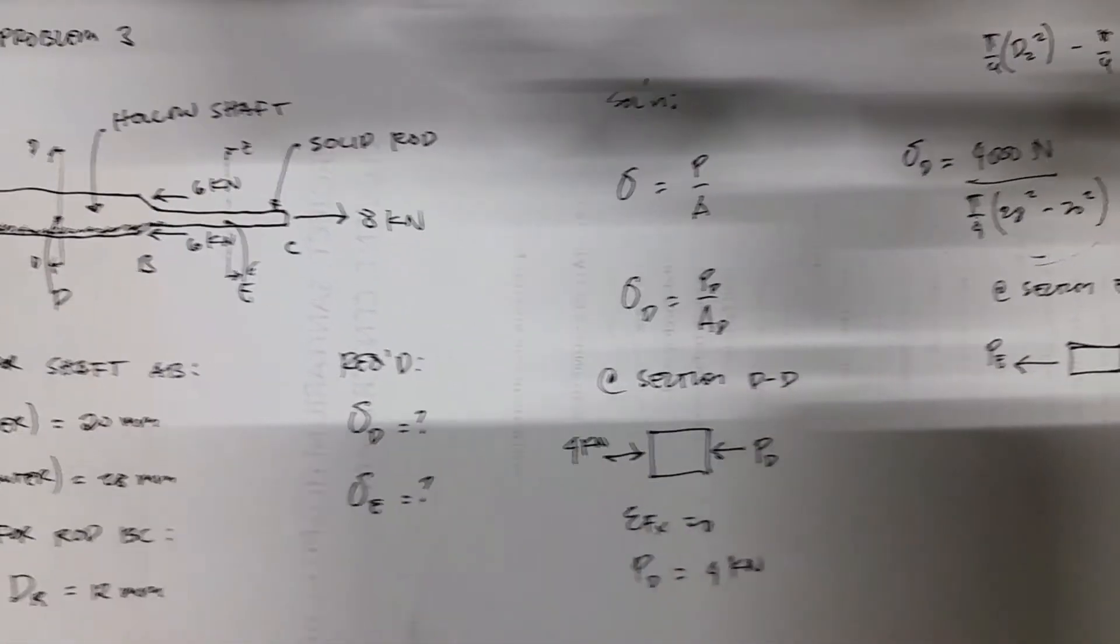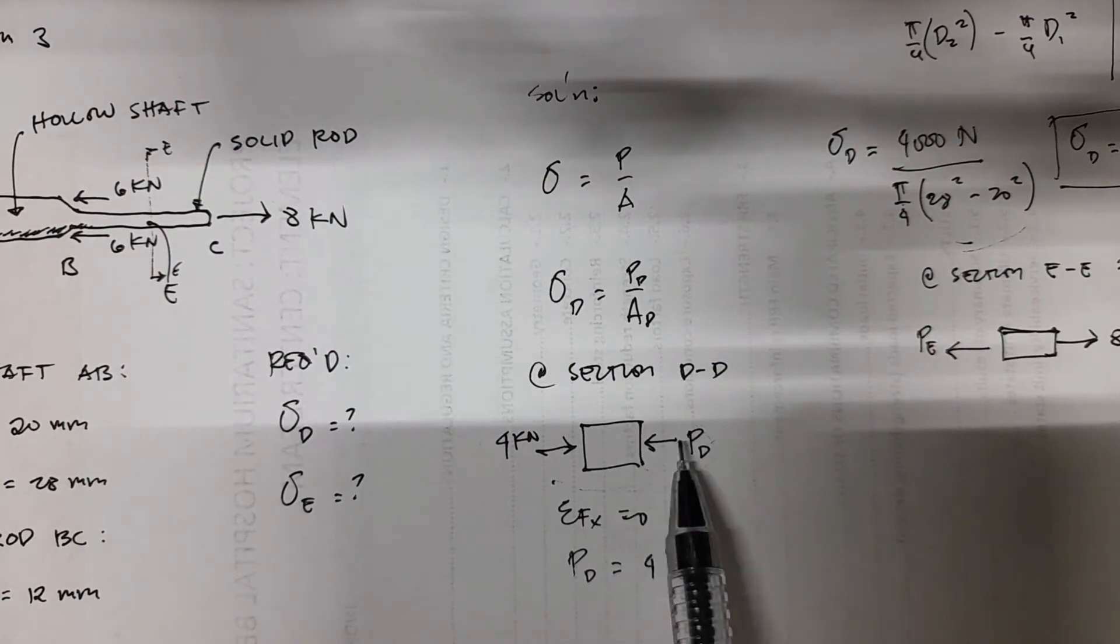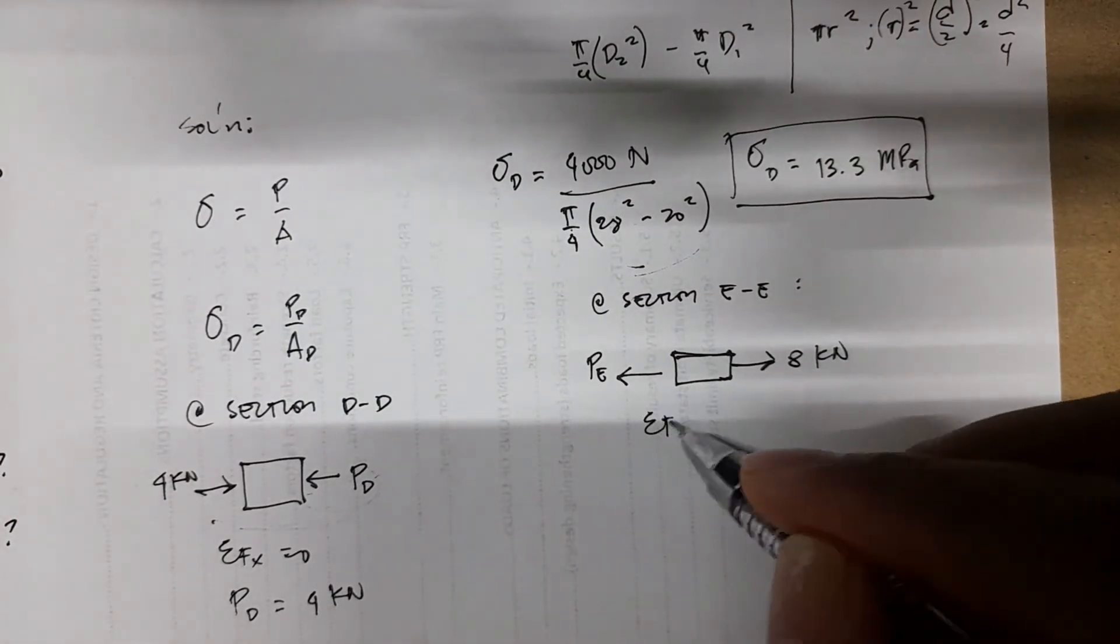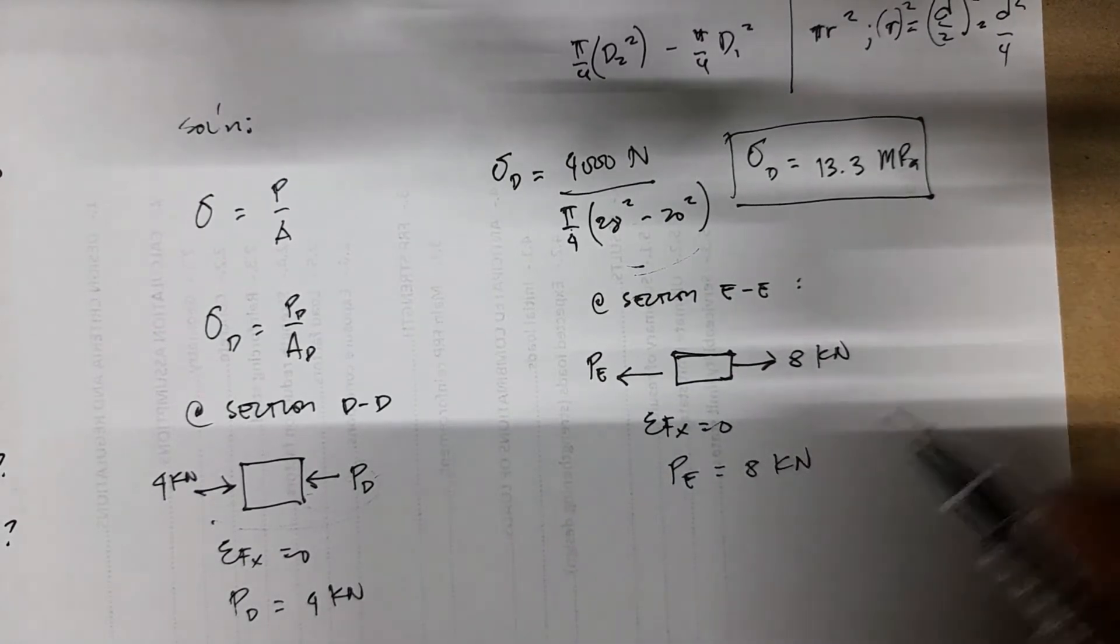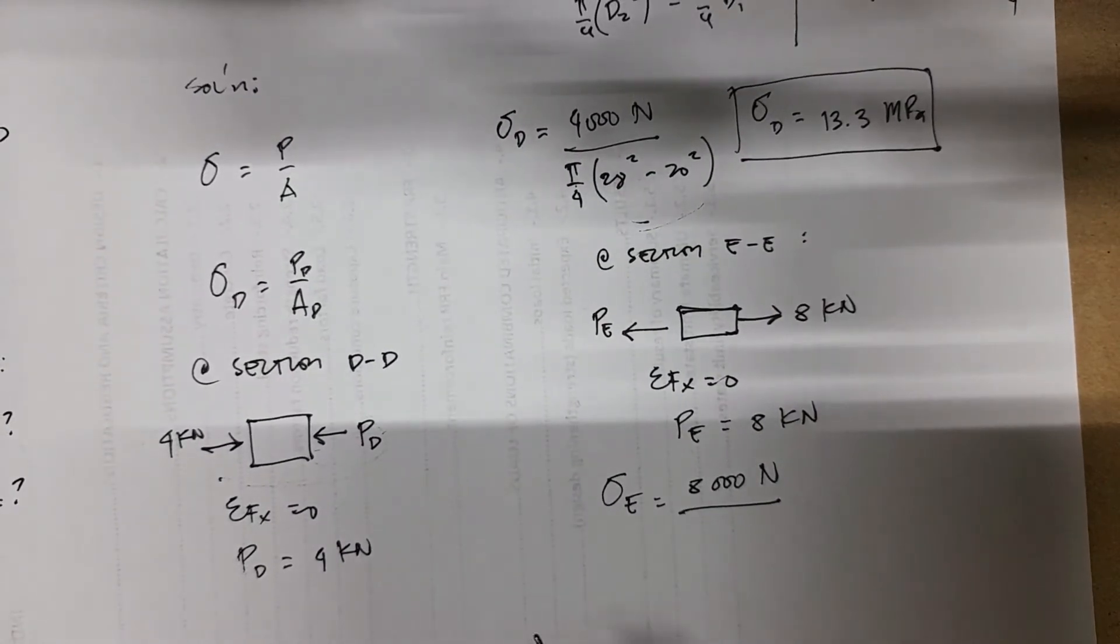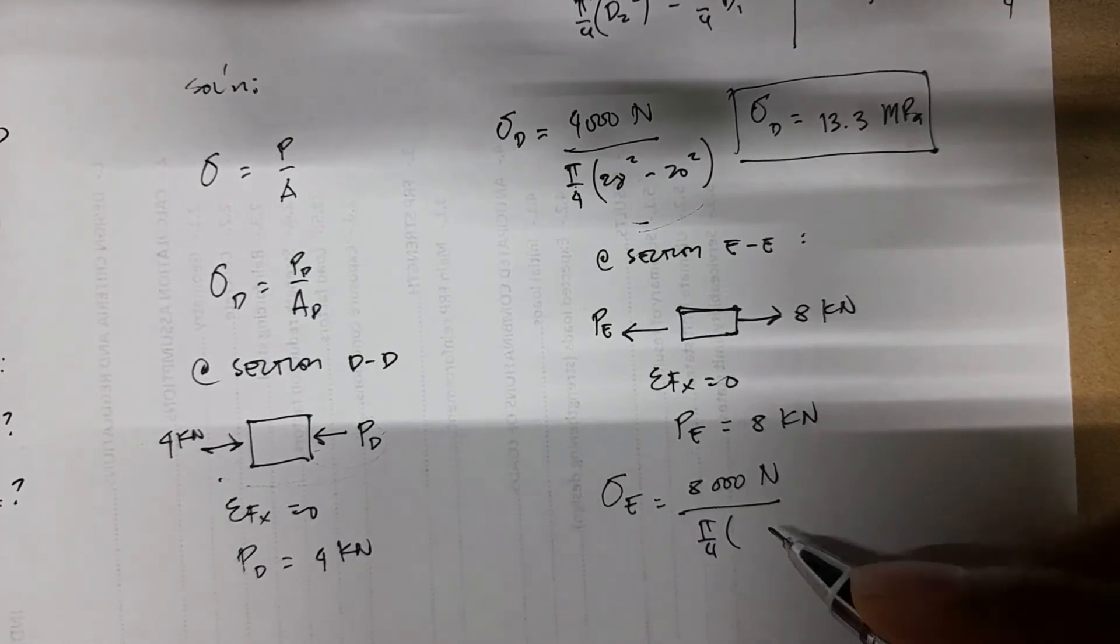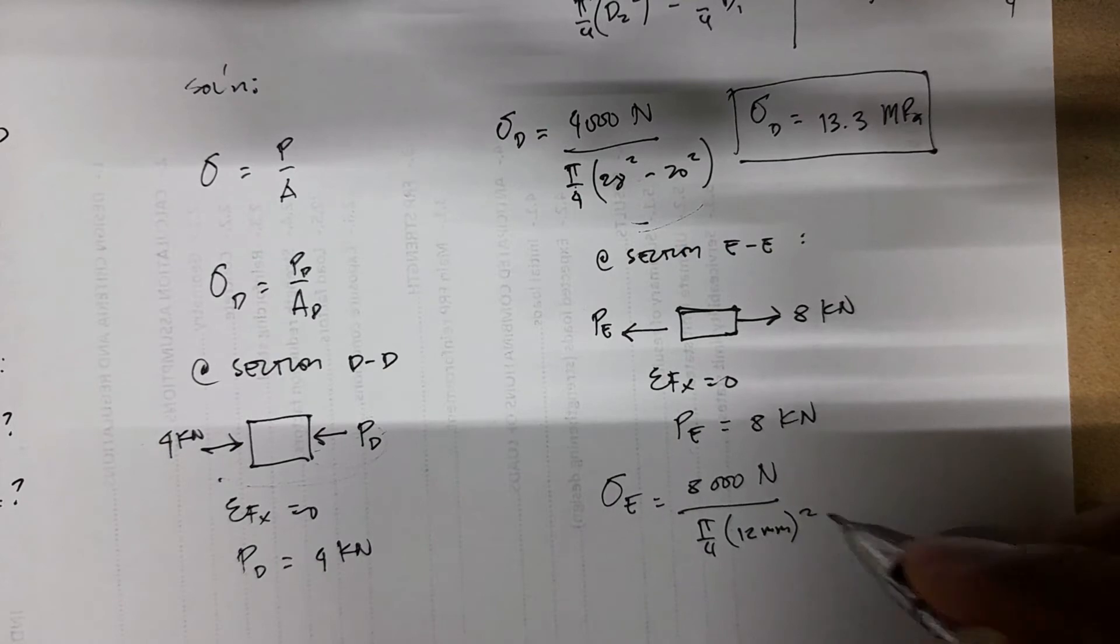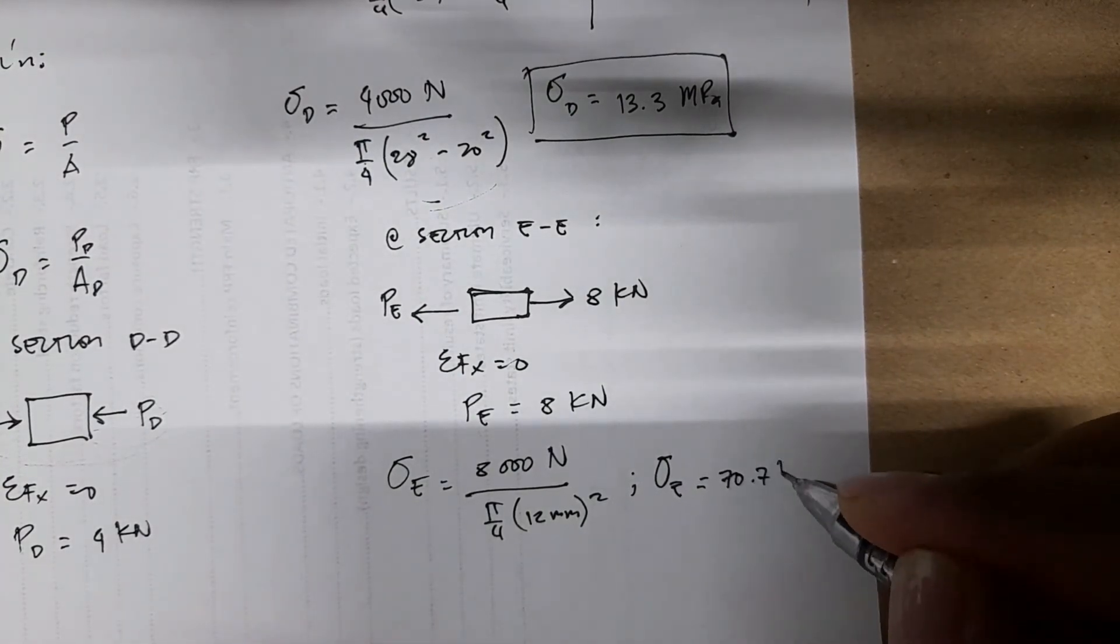So same with the previous computation. The reaction force is always on the opposite direction of your external force. So again, summation of forces along the x-axis is equal to zero. We have PE, it's just equal to 8 kN. And then you have the stress at E. It's just equal to 8,000 N divided by the area now because point E is at the section at the solid rod. We only have a single diameter. So pi over 4 times your diameter which is 12 mm squared. Your stress E is equal to 70.7 MPa.